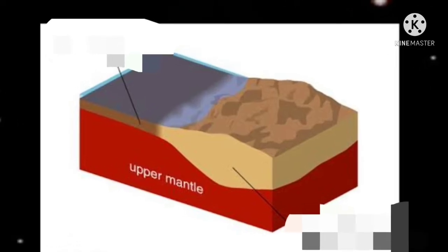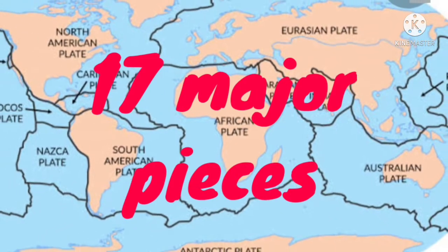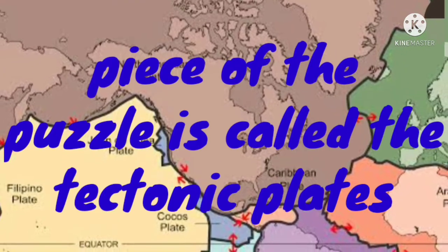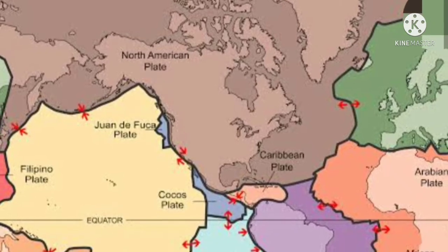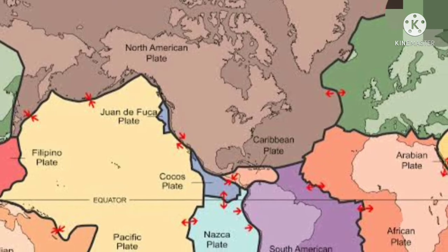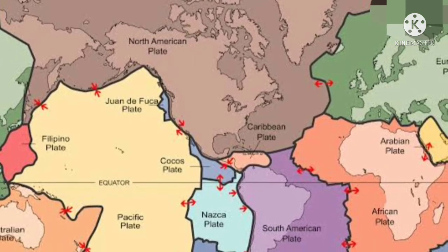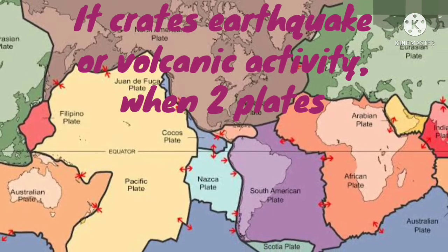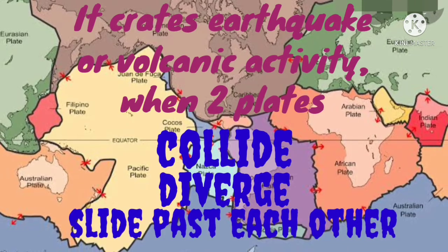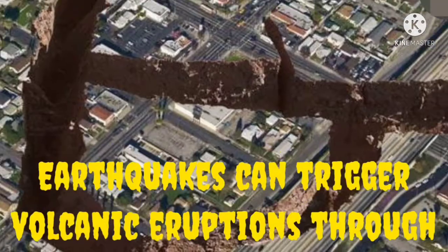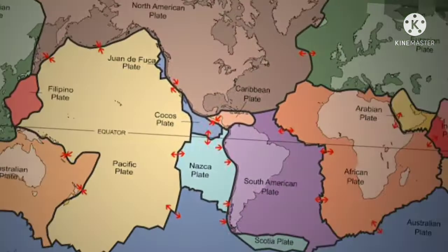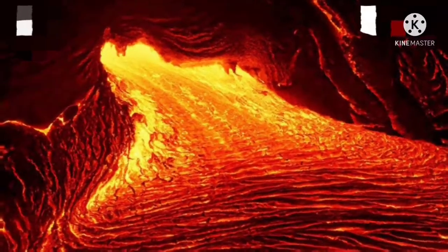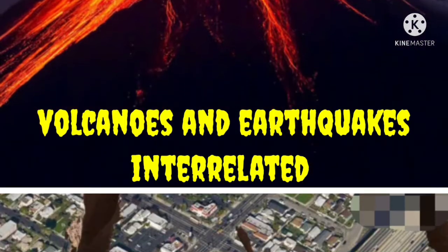The lithosphere is broken up into 17 major separate pieces that fit together like a bad jigsaw puzzle. A piece of the puzzle is called a tectonic plate. The plates are horribly placed, with overlapping pieces, gaps, and a force to fit with each other even when they don't. Because the tectonic plates don't go well together, it creates earthquakes and volcanic activity when two plates collide, diverge, or slide past each other. Earthquakes can trigger volcanic eruptions, and similarly, volcanoes can trigger earthquakes through the movement of magma within a volcano.